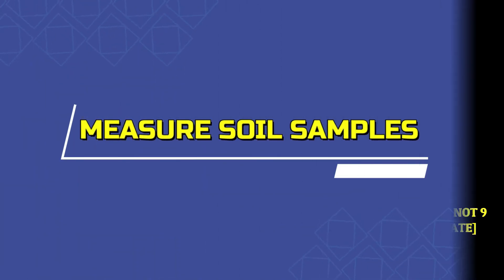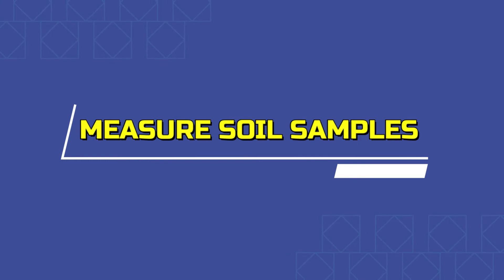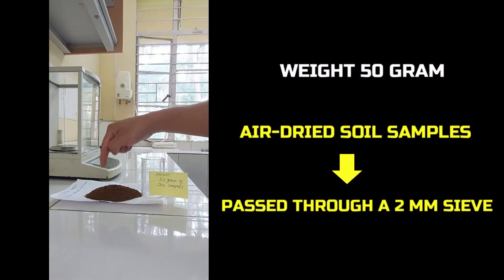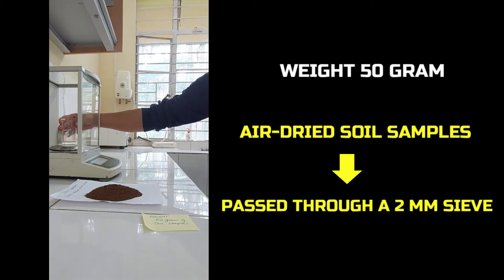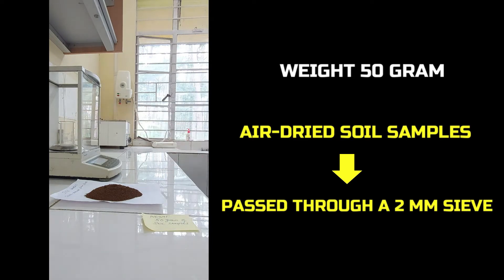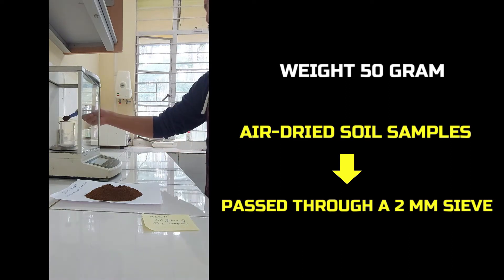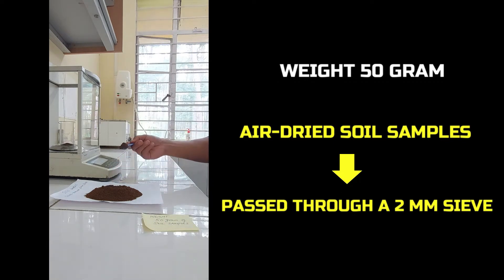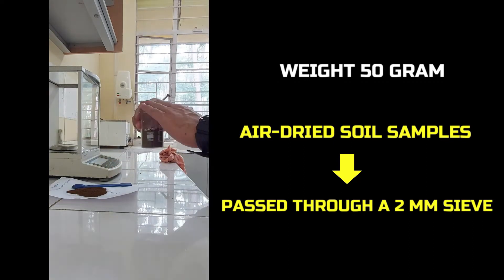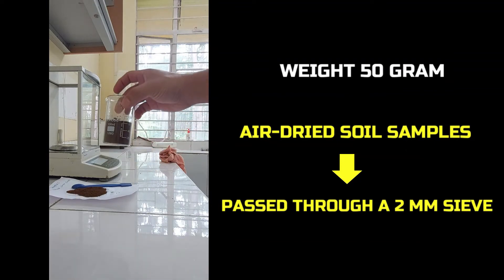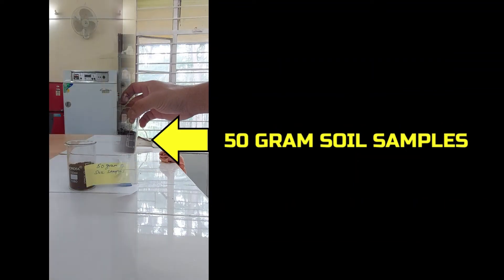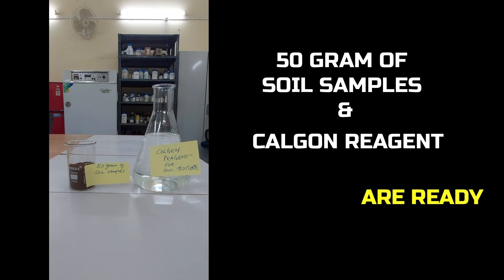Next is measurement of the soil samples. Weigh 50 grams of the air-dried soil sample which has been passed through a 2 mm sieve. This is the 50-gram soil sample. Now the 50 grams of soil sample and the Calgon reagent are ready.